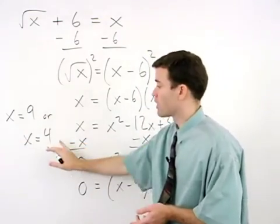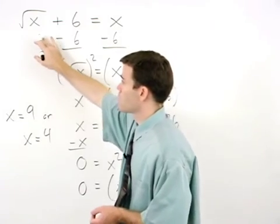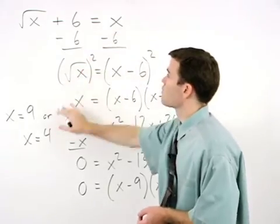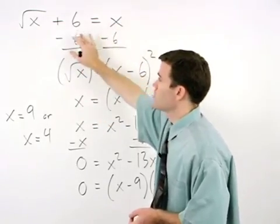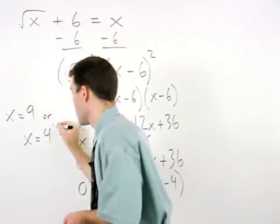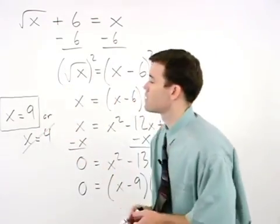But notice that when we plug a 4 back in for x in the original equation, we have the square root of 4, which is 2 plus 6 equals 4. And 2 plus 6 does not equal 4, so 4 cannot be a solution. And our answer is only x equals 9.